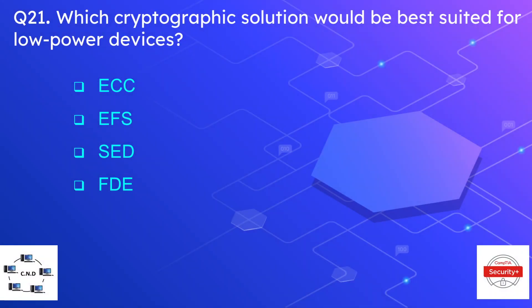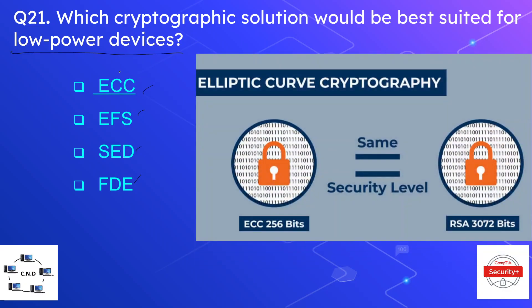Question number twenty-one: which cryptographic solution is best suited for low-power devices? The options are ECC, EFS, SED, and FDE. The correct option is ECC or Elliptic Curve Cryptography. For example, 256 bits of ECC is equivalent to 3072 bits of RSA — using fewer bits and less processing power while achieving the same strength, making it suitable for low-power devices.